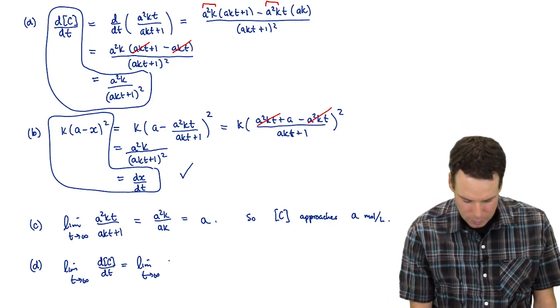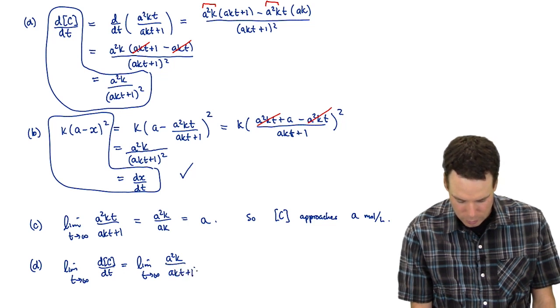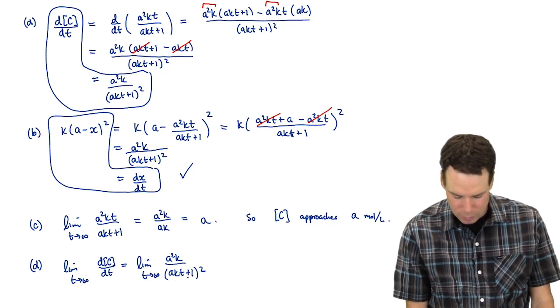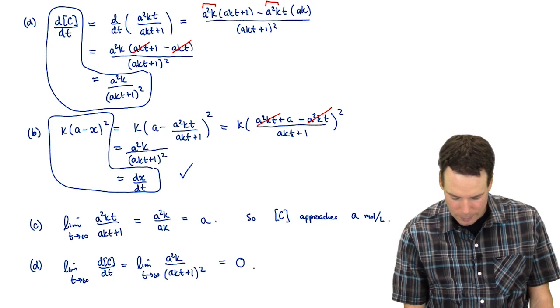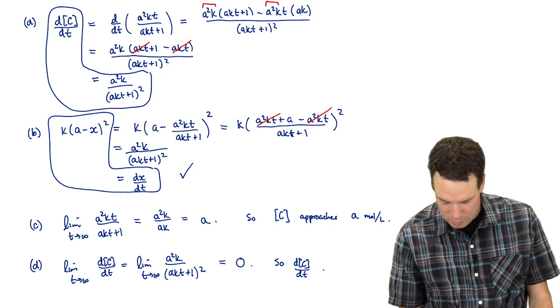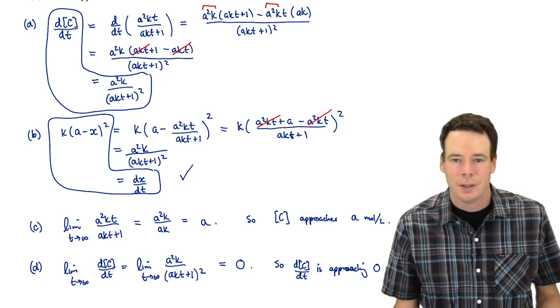And let's see if that's the case. So this is a squared k over akt plus 1 squared. As t goes to infinity, the top's constant, the bottom has t in it, so that's getting bigger and bigger and bigger. Constant divided by something going off to infinity has a value of 0. And so what's happening to our reaction rate? dc/dt is approaching 0. So that's it for this example.